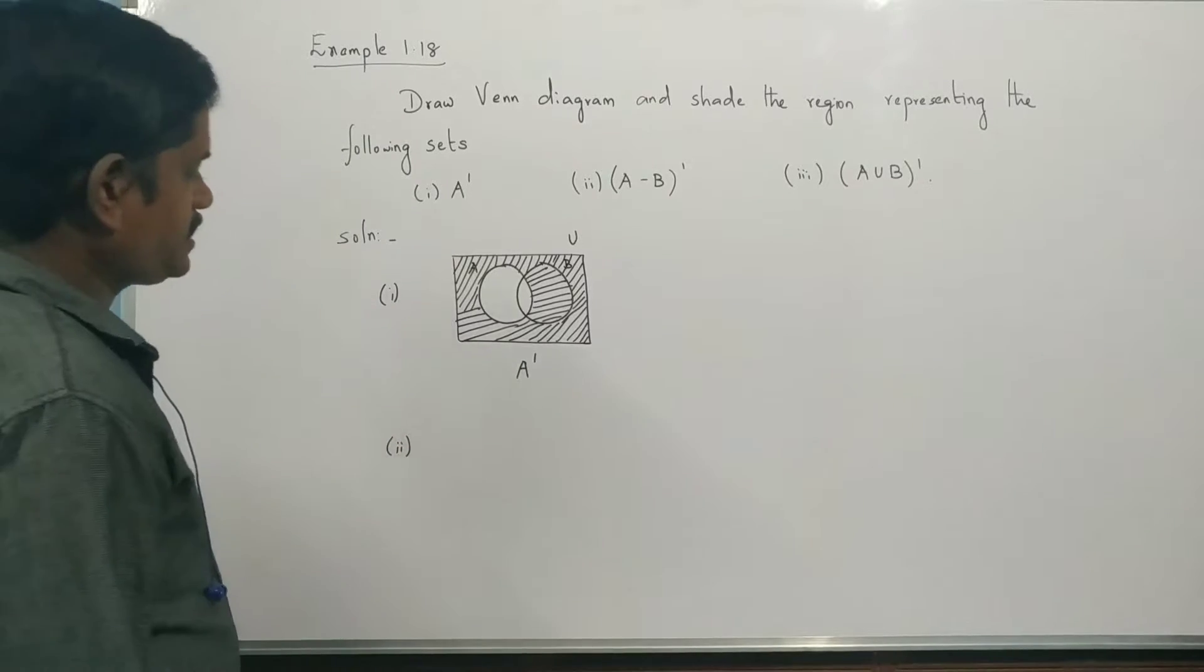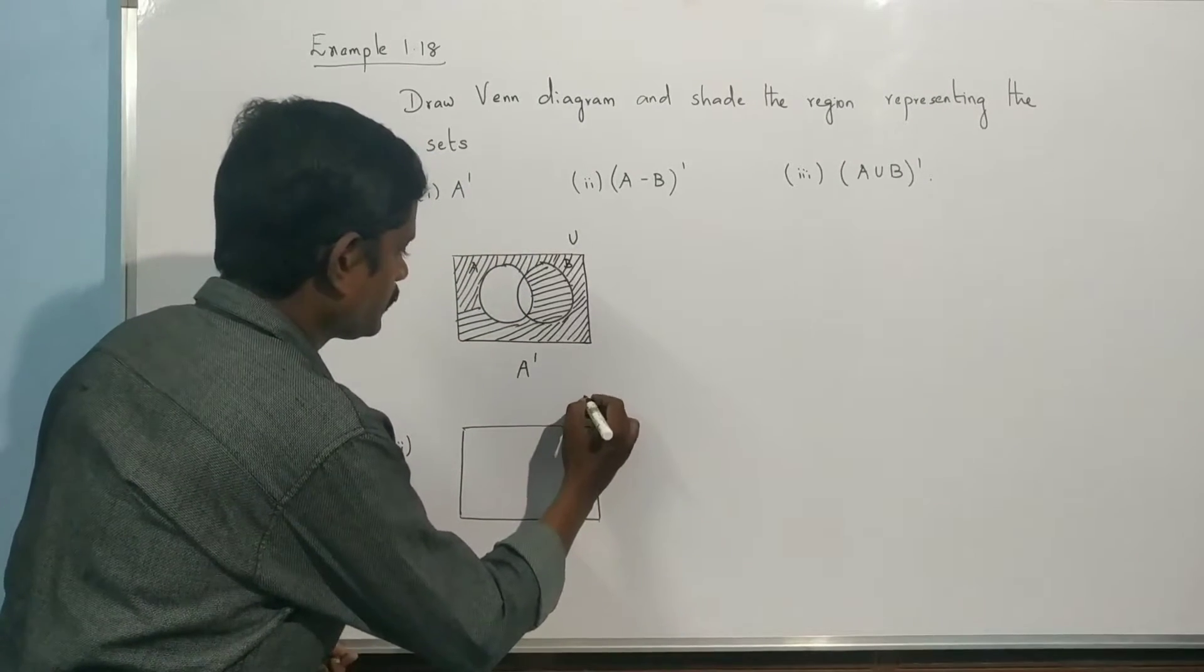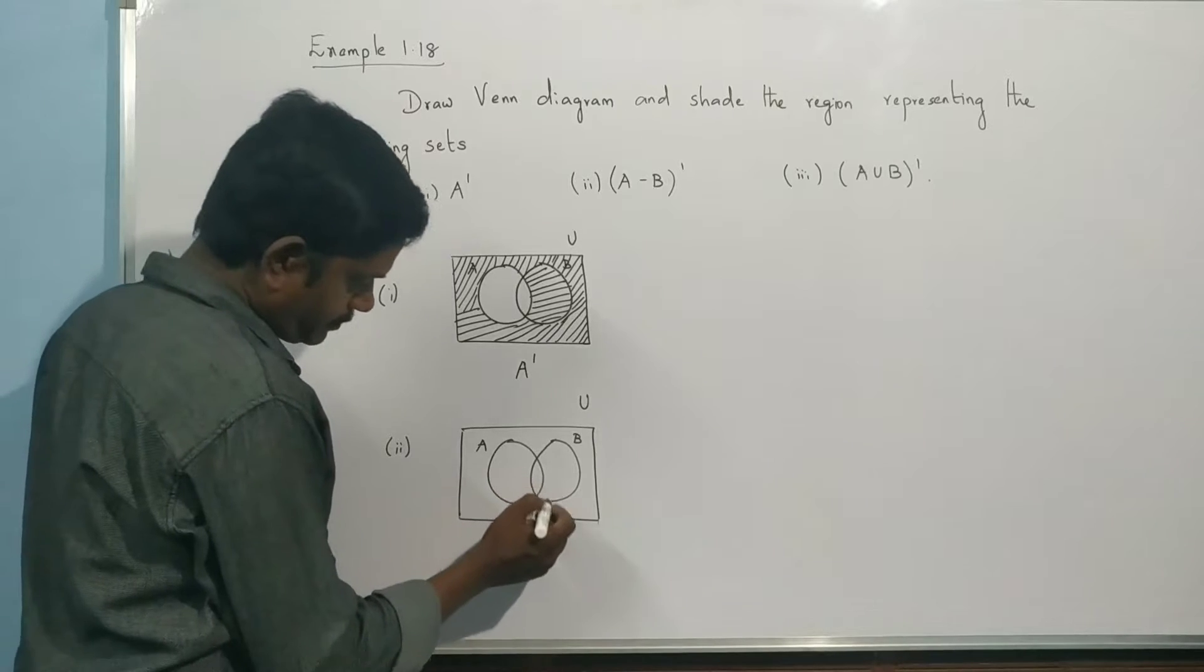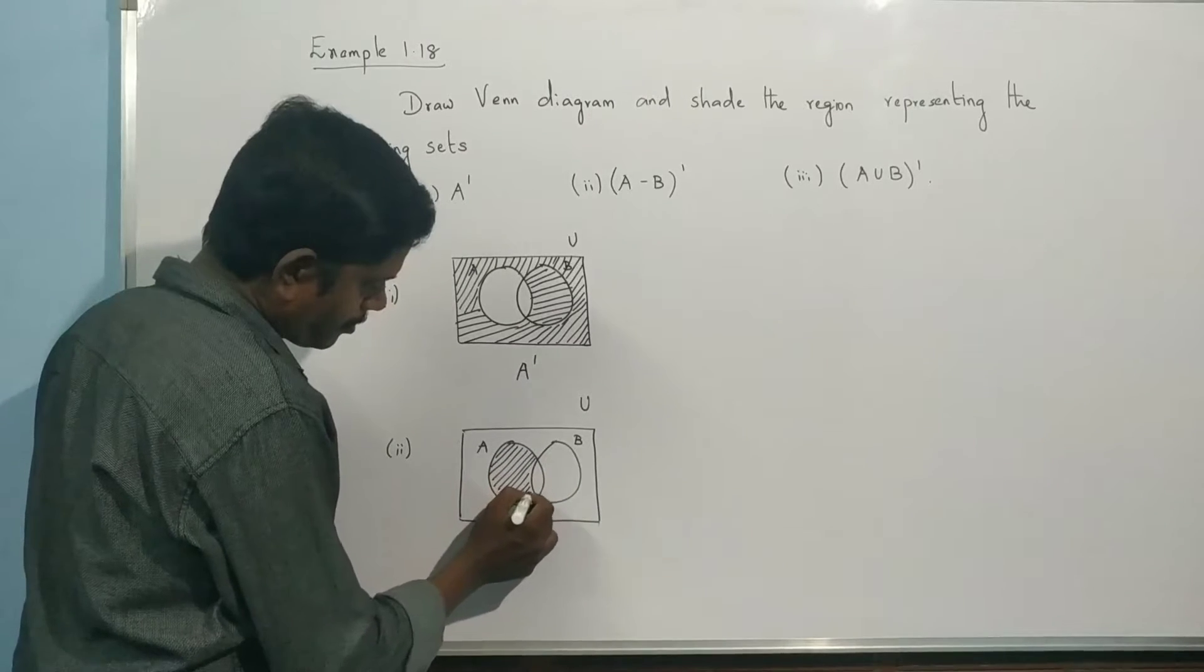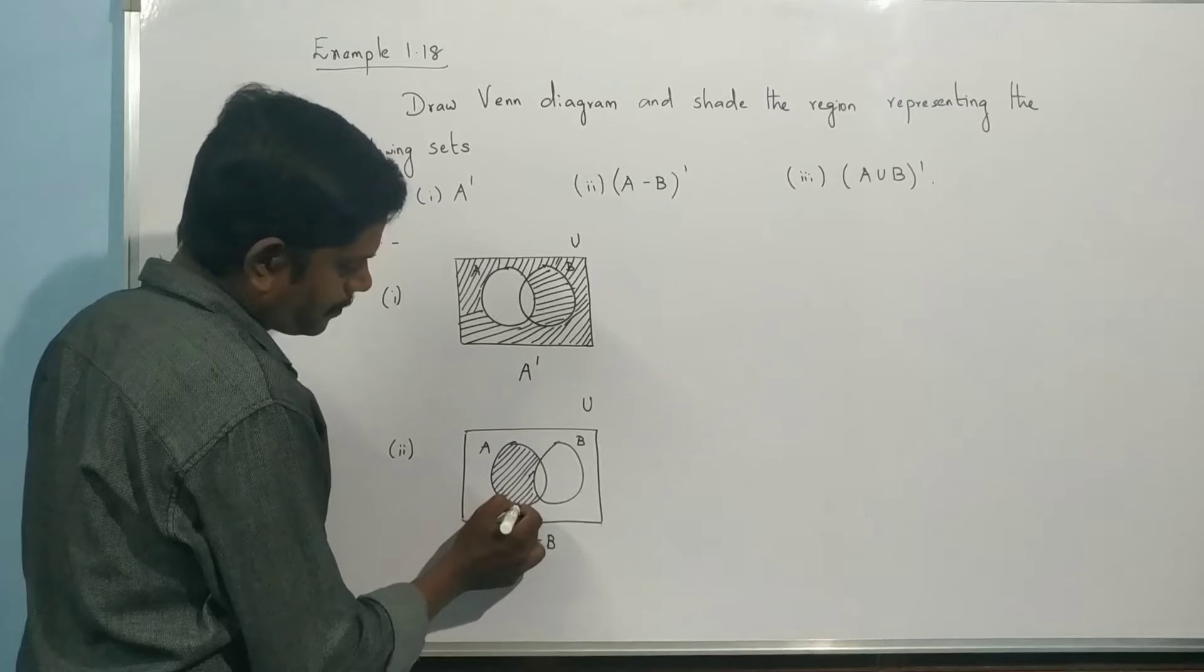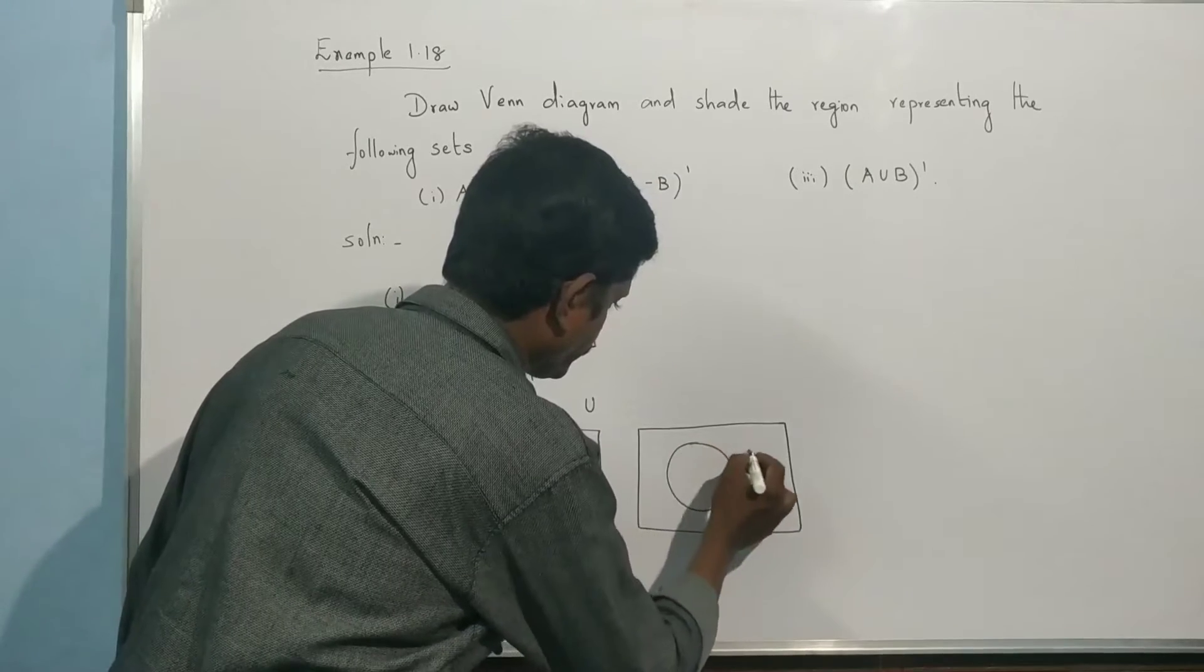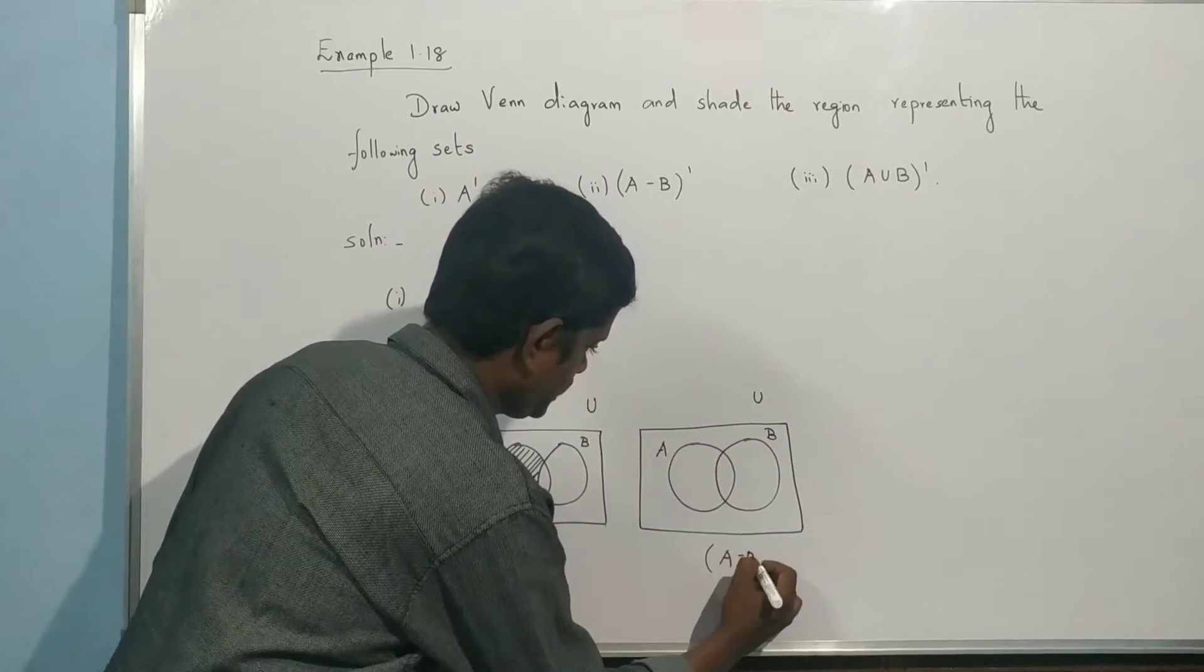Second one, A minus B the whole dash. First, find A minus B. A minus B is B removed from A. So this is union, this is A, this is B. Now we will do A minus B the whole dash.